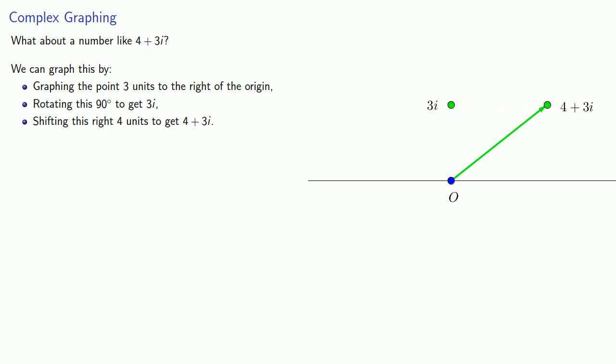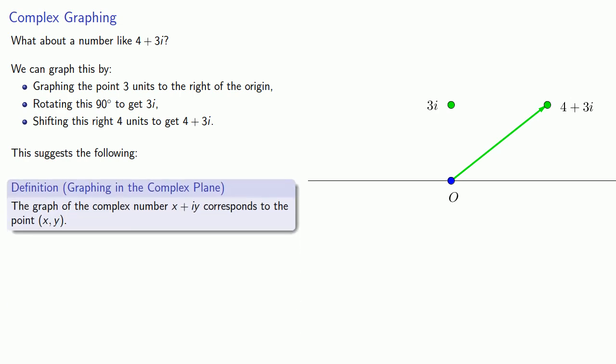Now, we've graphed this point 4 plus 3i over here someplace, but this should look awfully familiar to you. This process suggests the following: the graph of the complex number x plus iy corresponds to the point (x, y).